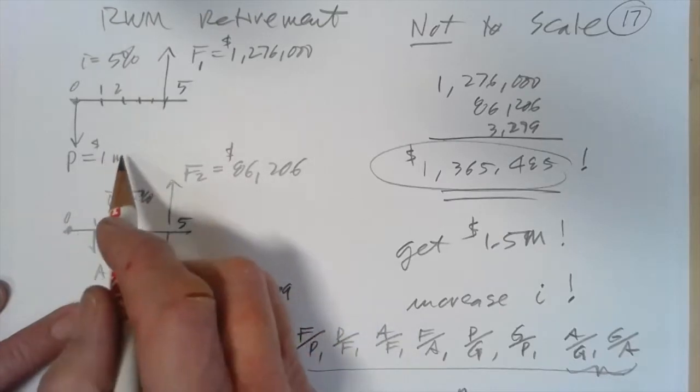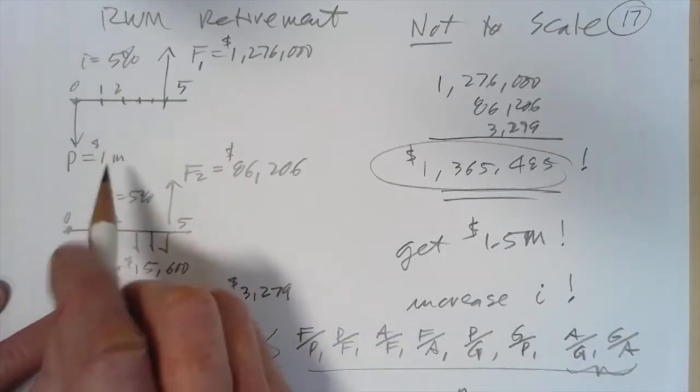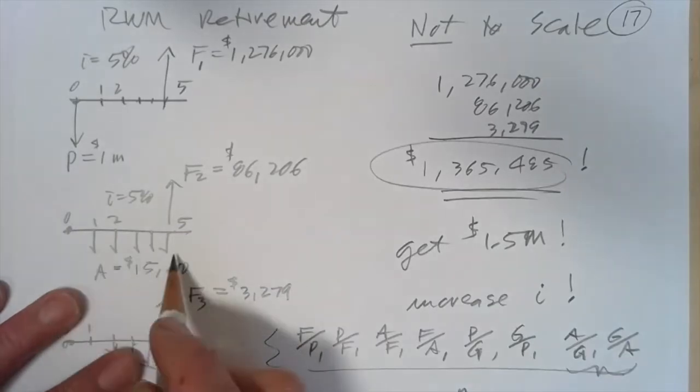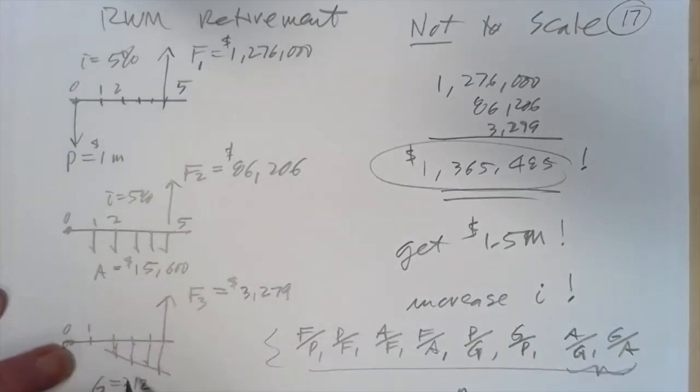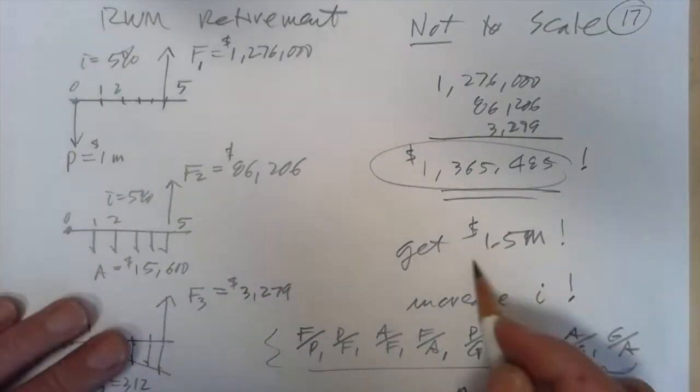From my current assets, my wife's and my current assets of a million, plus future contributions of an A and a G. But I really wanted $1.5 million.